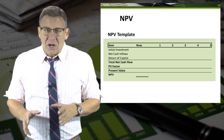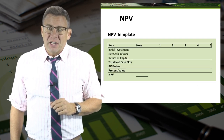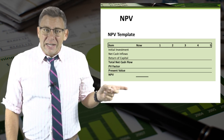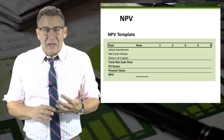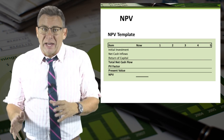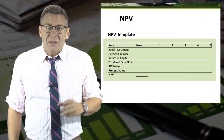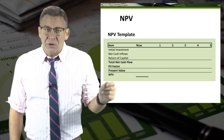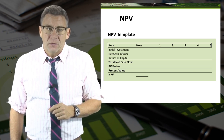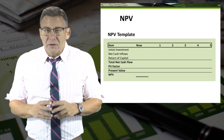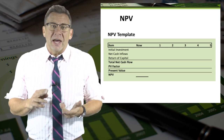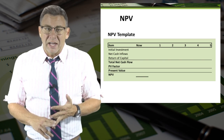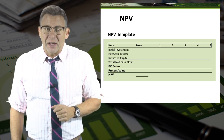When I solve net present value assignments, I usually set up a table like this. Under the item column, I can enter the items that create cash inflows and outflows. The other columns group the cash flows in the period they occur. They can be netted together, and then I can apply the present value factors from the table, or I can use Excel to solve for net present value.